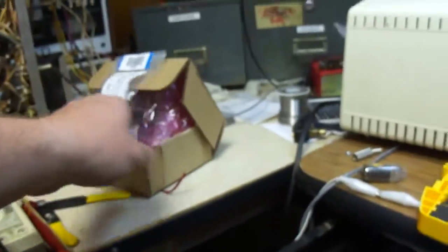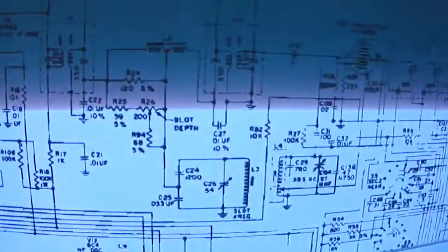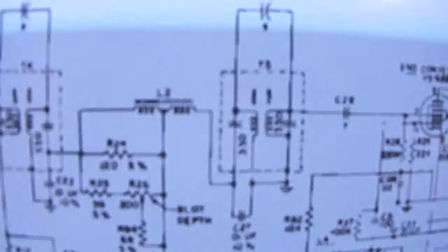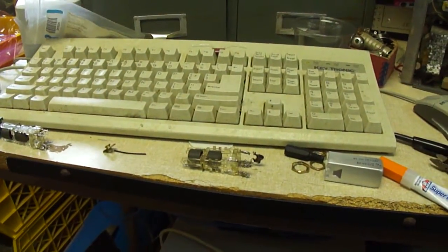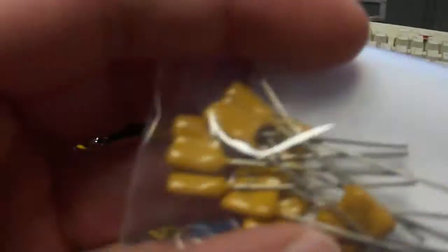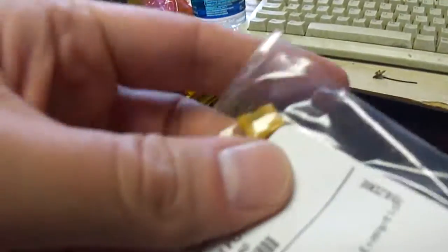Those take 330 pF caps in the IF can, which is more than I usually use on a table radio. Usually I use 100 pF for an AM stage on just a regular table radio, and 22 for FM circuits.